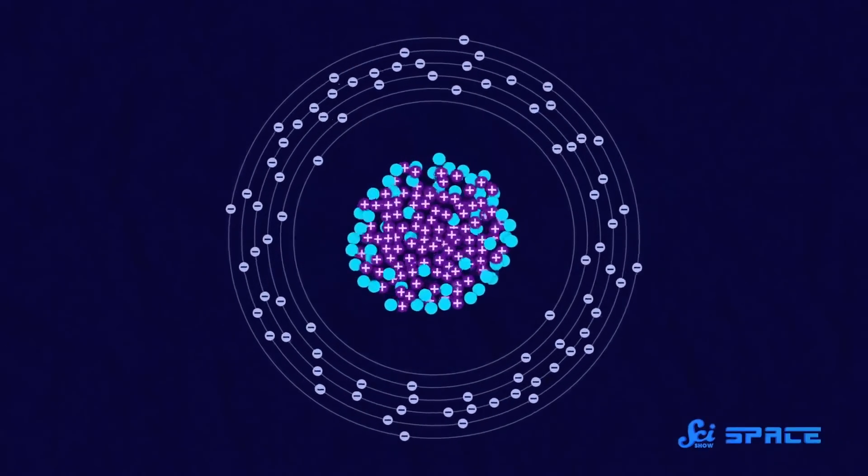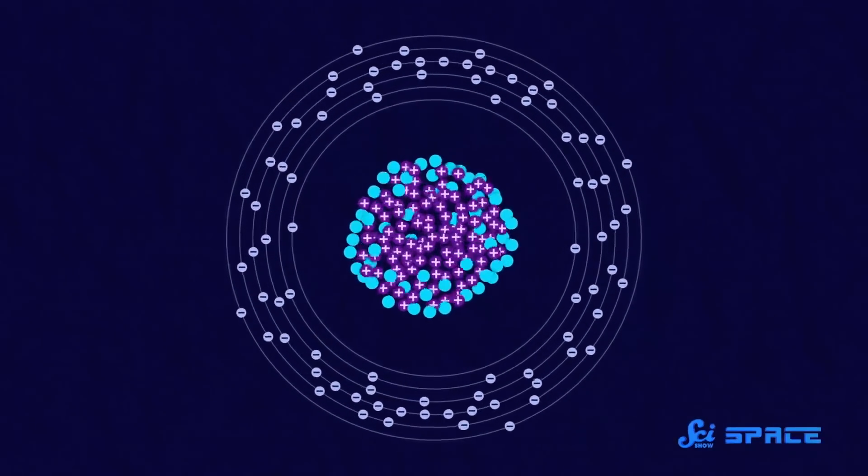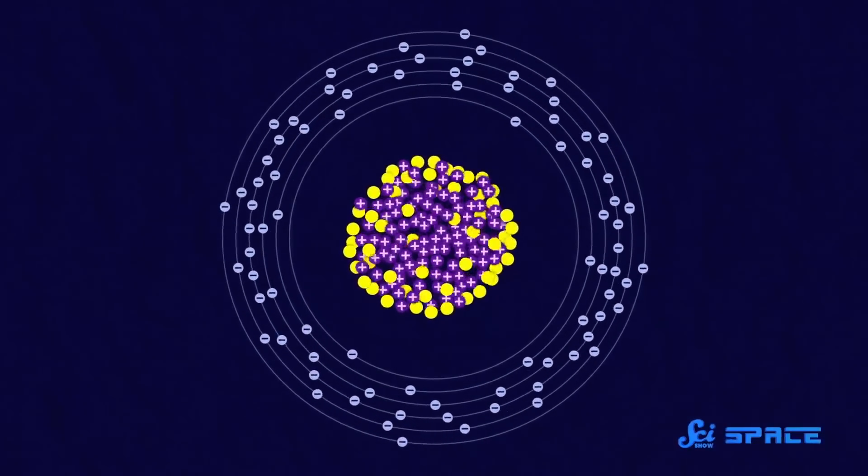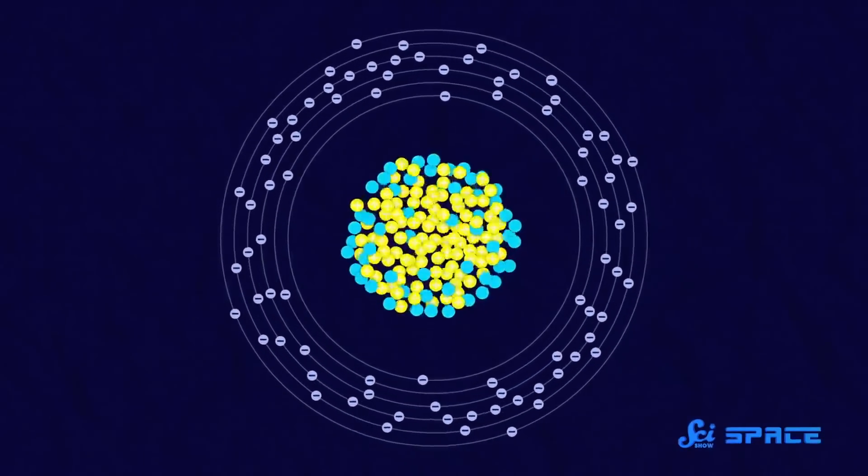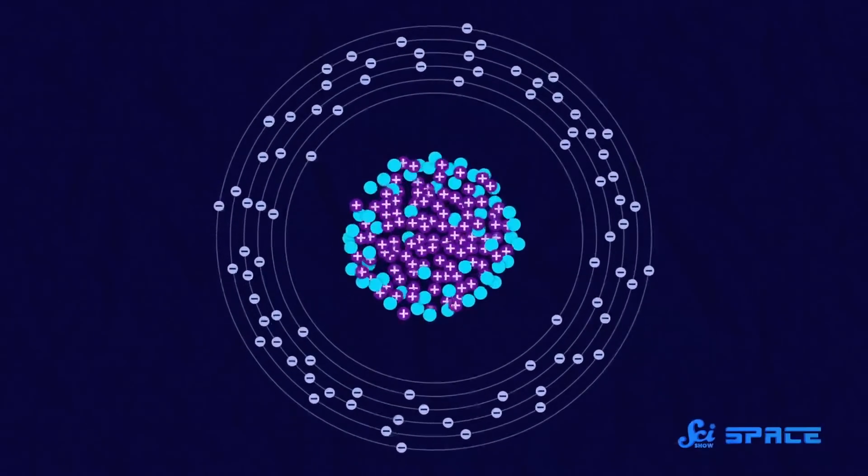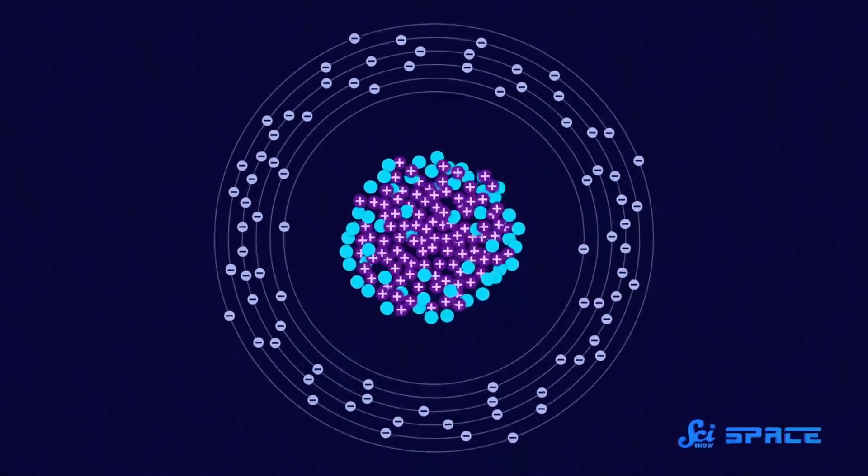In this atom, neutrons are farther from the center of the lead's nucleus than its protons. This arrangement happens because there are way more neutrons than protons, and they don't all fit in such close quarters. As the outermost particle of these lead atoms' nuclei, neutrons can give us an idea of how big the lead molecule is.